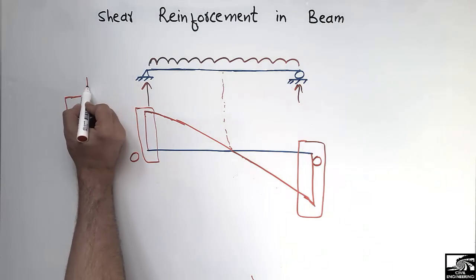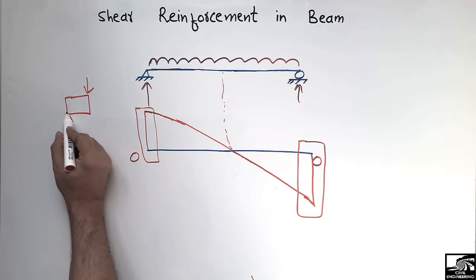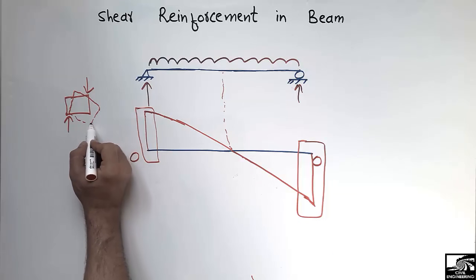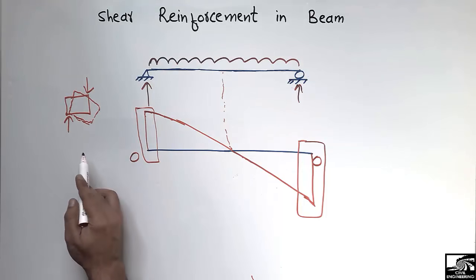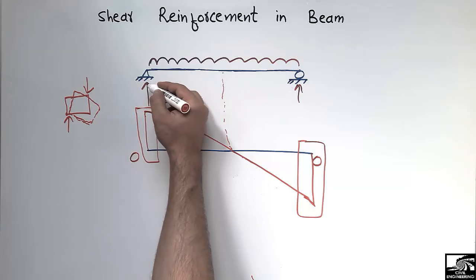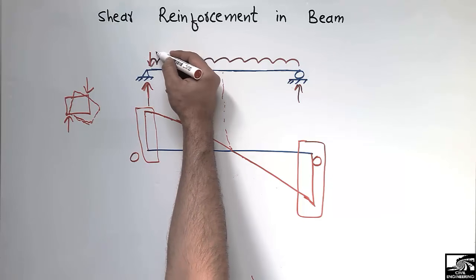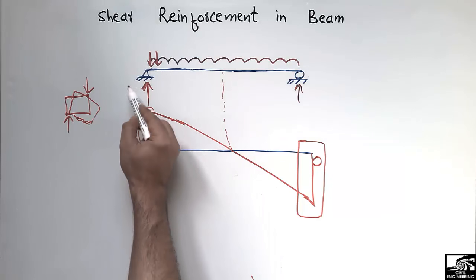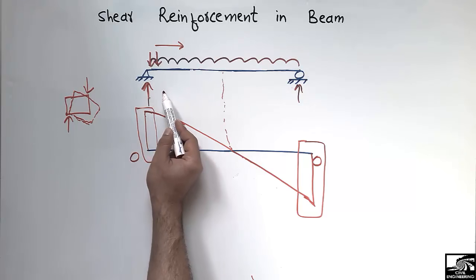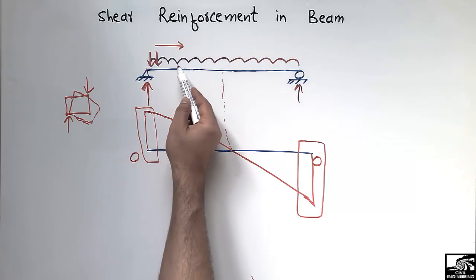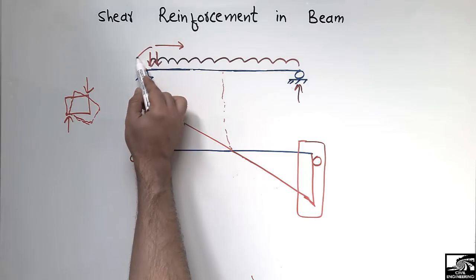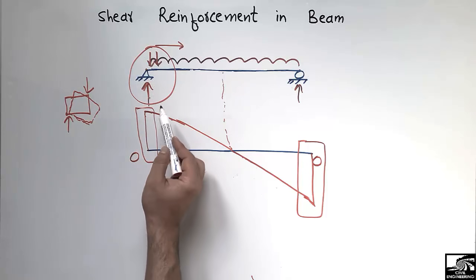Consider any object with a force acting at one point and another force acting in the opposite direction at another point. Due to these forces, the object will try to slide and stresses are created inside — we call these shear stresses. Similarly, in the beam, the support reaction acts upward while the load acts downward, creating shear stresses. Near the support, the support reaction dominance is high, so higher shear stresses are created.